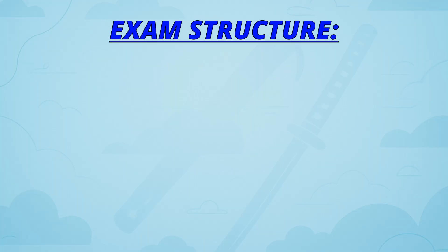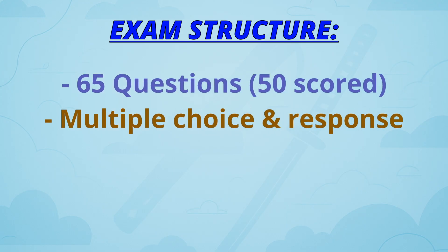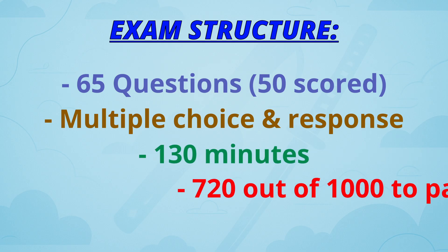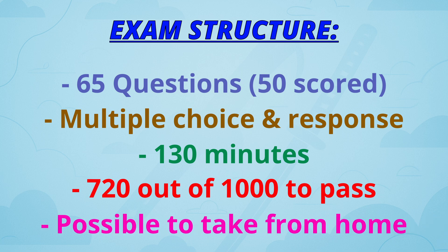Now let's talk about the exam format. It is still an associate level exam, which is not as hard as specialty or professional. The basic structure stays the same: 65 total questions, 50 scored and 15 unscored, multiple choice and multiple response questions, 130 minutes to complete, and a 720 out of 1000 passing score. You can take it either at in-person testing centers or through online proctoring at home.